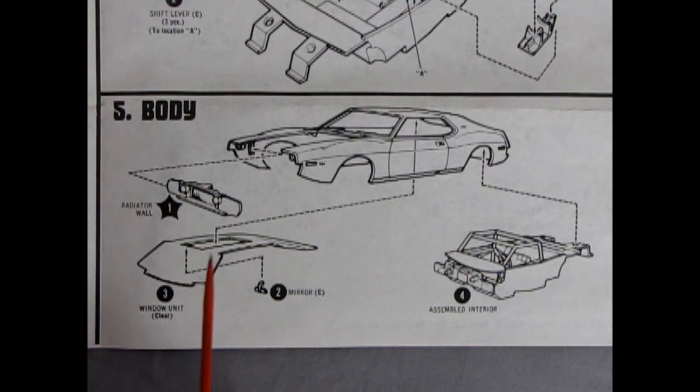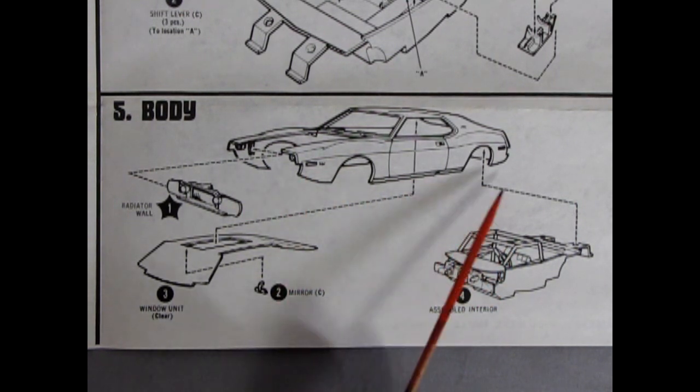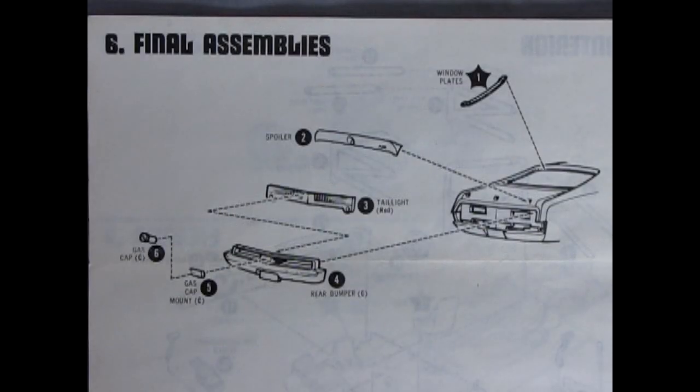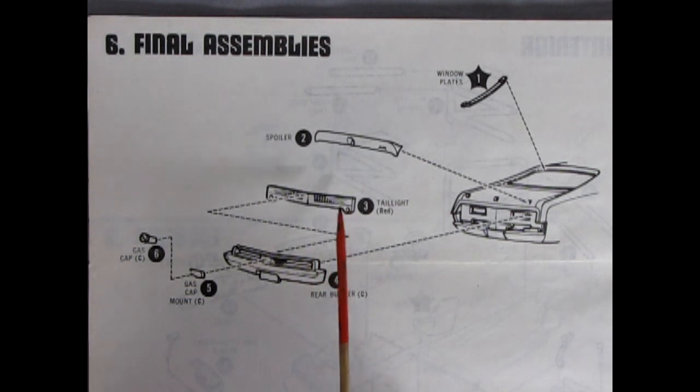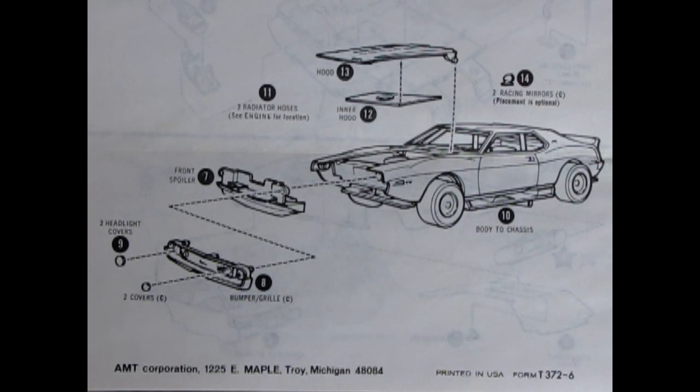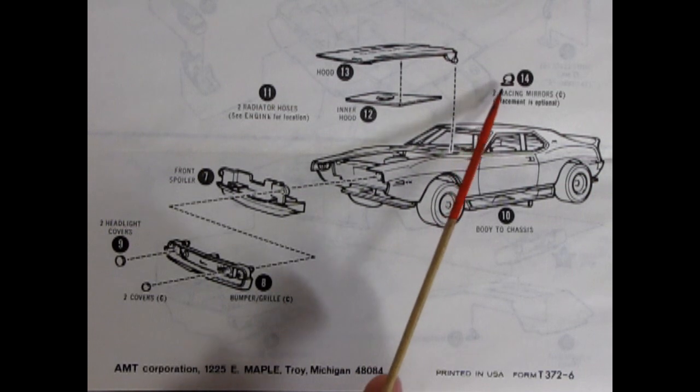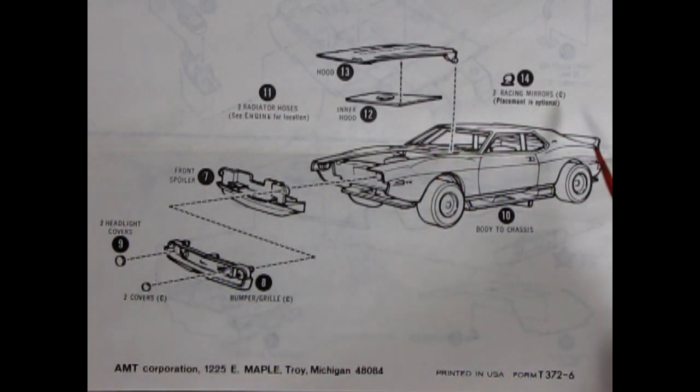Next up, we have our body assembly starting with our radiator wall being glued up here in the front. Then our window and mirror pop into place, followed by our assembled interior, which hooks up underneath and slots into the back of the body. Panel six shows our final assemblies with the window plates being locked in at the back, spoiler popping in, the tail lights gluing into the back end of the bumper, the gas cap mount and gas cap glue in right in there. And looking from the front view, we get our headlight covers going onto that nice bumper grille assembly, which pops into the front spoiler pan. The inner hood glues up underneath of the actual hood, and the two racing mirrors pop on the side and the whole thing lines on that chassis.